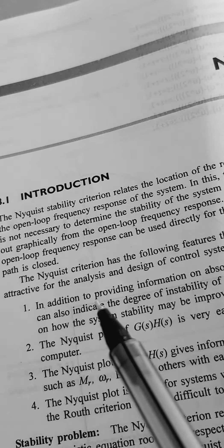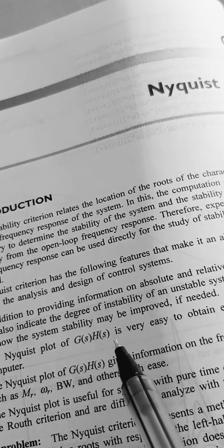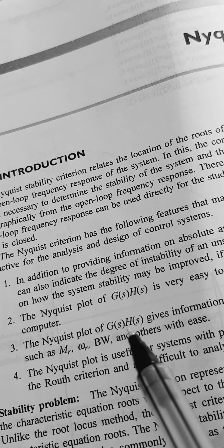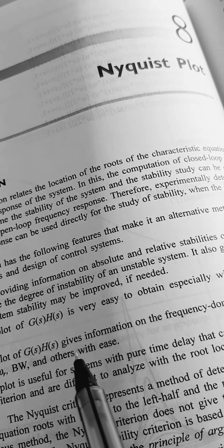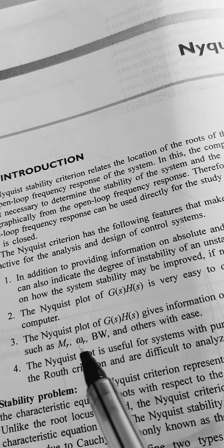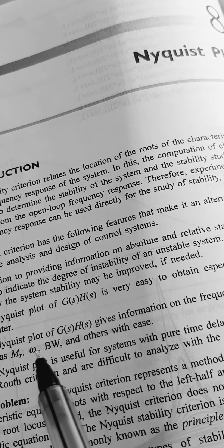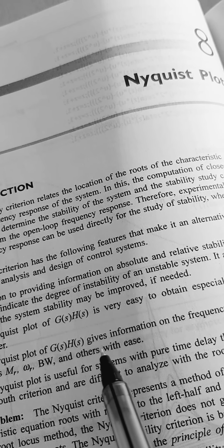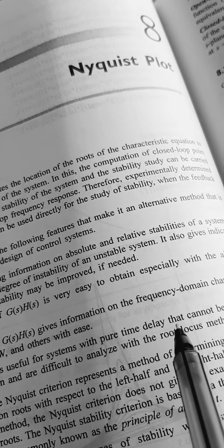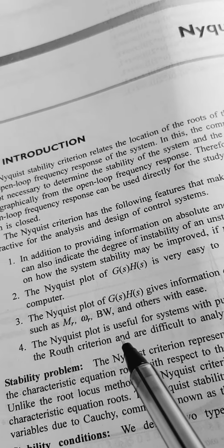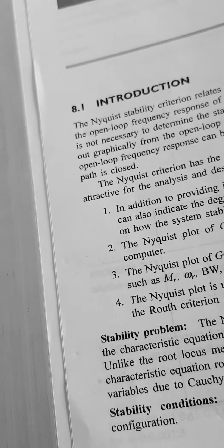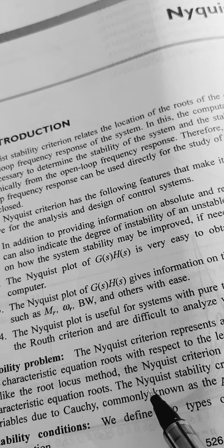The Nyquist plot of G(s)H(s) is very easy to obtain, especially with the aid of a computer. It gives information on frequency domain characteristics such as Mr (resonant peak), Wr (resonance frequency), bandwidth, and others. The Nyquist plot is also useful for systems with a pure time delay that cannot be treated with the root criterion and is difficult to analyze with the root locus method.